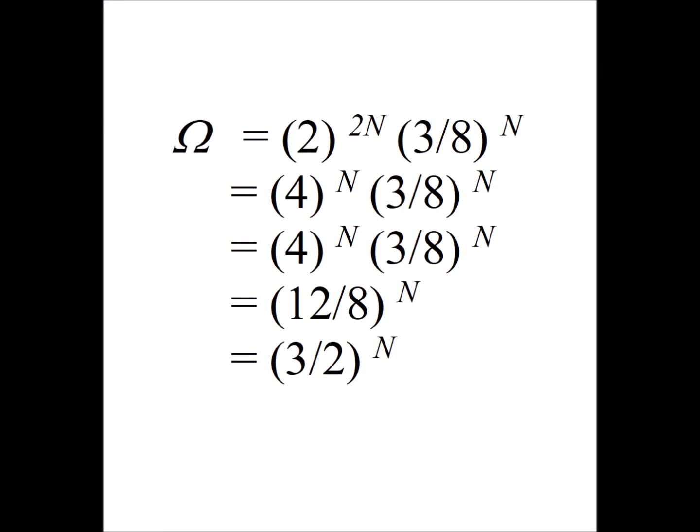So let's compute the number of configurations by Pauling's second method. At the beginning, we have the two to the two n, that's the number of different ways of arranging the hydrogen bonds, followed by the three over eight to the n power. This is the proportion of those which lead to legitimate configurations. And then we can use the powers of exponents that two to the two n is simply four to the n power. We can pull everything under the n and we get 12 divided by eight to the n power, which is simply the same as three over two to the n power. So we see that whether we use Pauling's first method or his second method, we get exactly the same answer for the number of configurations of water in ice.